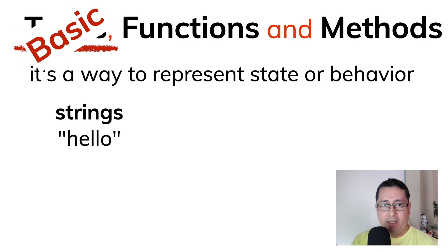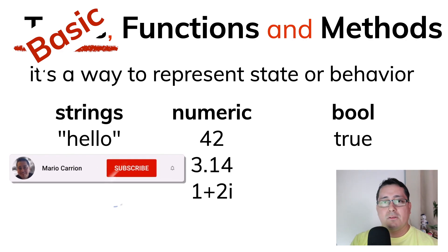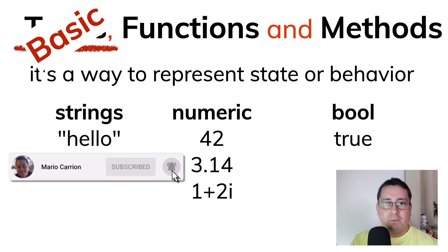There are basic types like strings, numeric that include integers, pointers, floats, and complex types, and depending on the size that you want to store, you may select different types like int8 or int64, and there are also booleans that represent a dual force value.